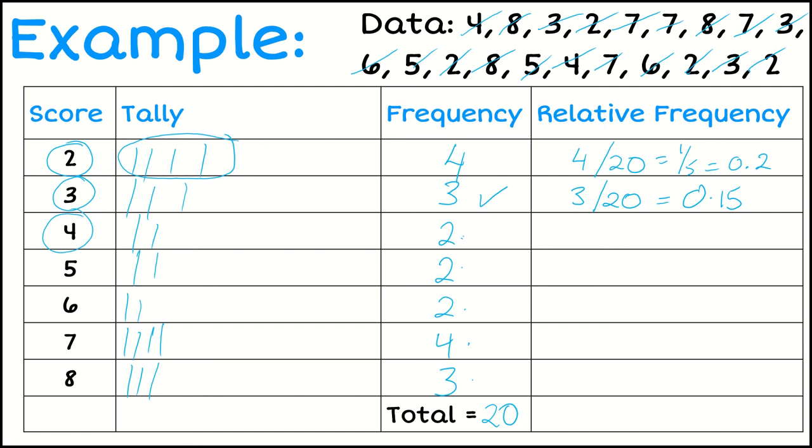The next one, the score of 4, has a frequency of 2. So its relative frequency would be 2 out of the total of 20. And that goes down to 1 over 10 or 0.1.